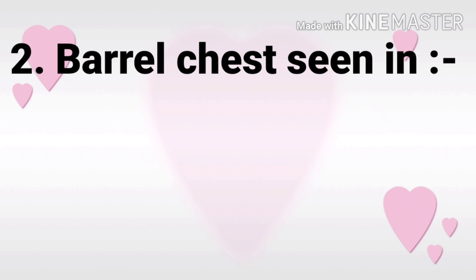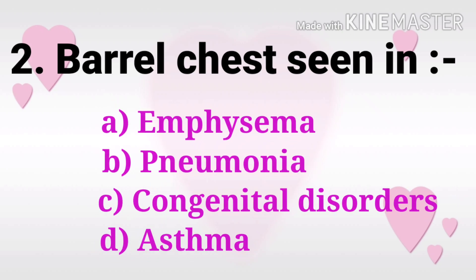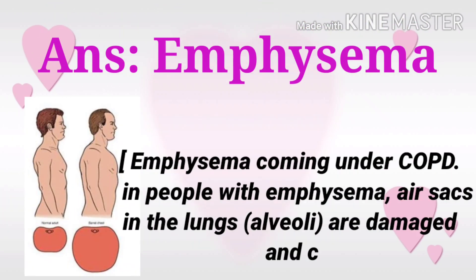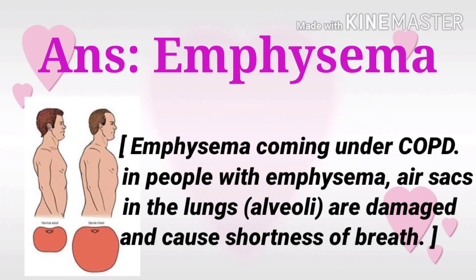Question 2: Barrel chest is seen in? The options are emphysema, pneumonia, congenital disorders, and asthma. The answer is emphysema. Emphysema comes under COPD. In people with emphysema, the air sacs in the lungs (alveoli) are damaged and cause shortness of breath.